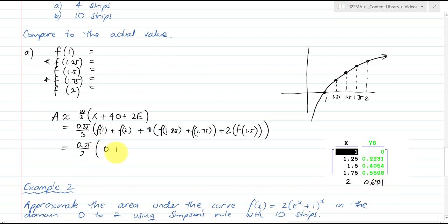And f(1) is 0, plus 0.2231, 0.4054, 0.5596, plus 0.6931. And of course we do 4 times that one, 4 times that one, and 2 times this one. And so I can put that straight into my calculator now, which I have in front of me. And this value here, by the way, just to make it easier, is 1/12.